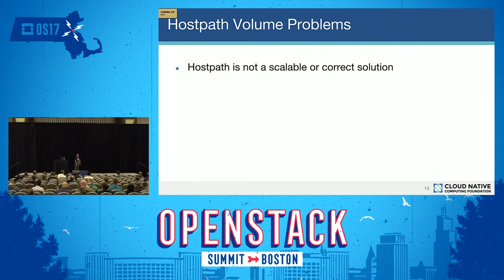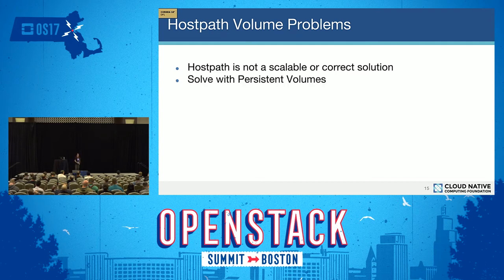Host path volumes is not a scalable or correct solution. What we are looking at is using an existing feature in Kubernetes today: the persistent volumes feature. This feature works very well for remote storage, and the challenge we are tackling is how to take this feature — designed for remote storage systems — and adapt it to local storage and its specific characteristics.